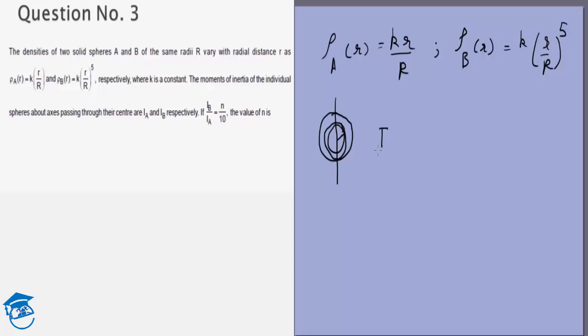So the total moment of inertia for A will be integral of, normally it would be dm times r squared, but we know that for a spherical shell about a diameter it's actually 2/3 times mr squared, 2/3 times r squared times dm.